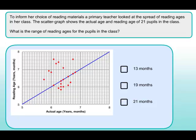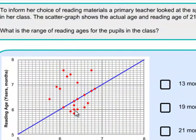Once again using the same scatter graph, we're asked: what is the range of reading ages for the pupils in the class? The range is just the difference between the maximum and minimum values. We're only looking at the reading age axis - the actual ages don't matter here. The maximum reading age is shared by two pupils, and the minimum is here. Counting up the months: 2 months, then a whole year making 14, then 15, 16, 17, 18, 19, 20, 21 months. And 21 months is the correct answer.